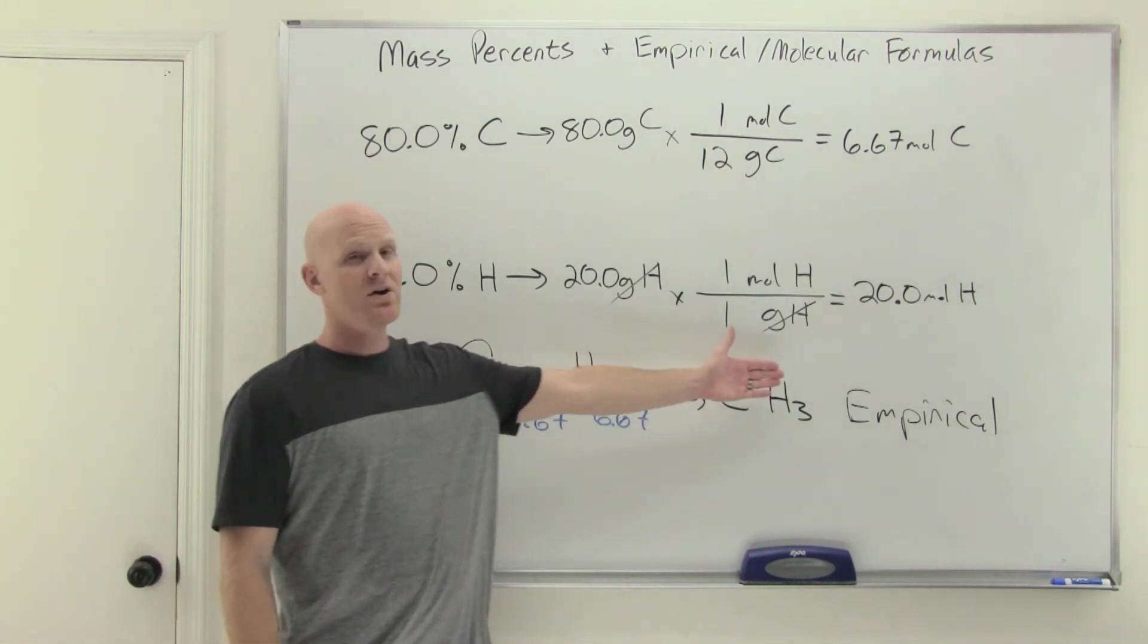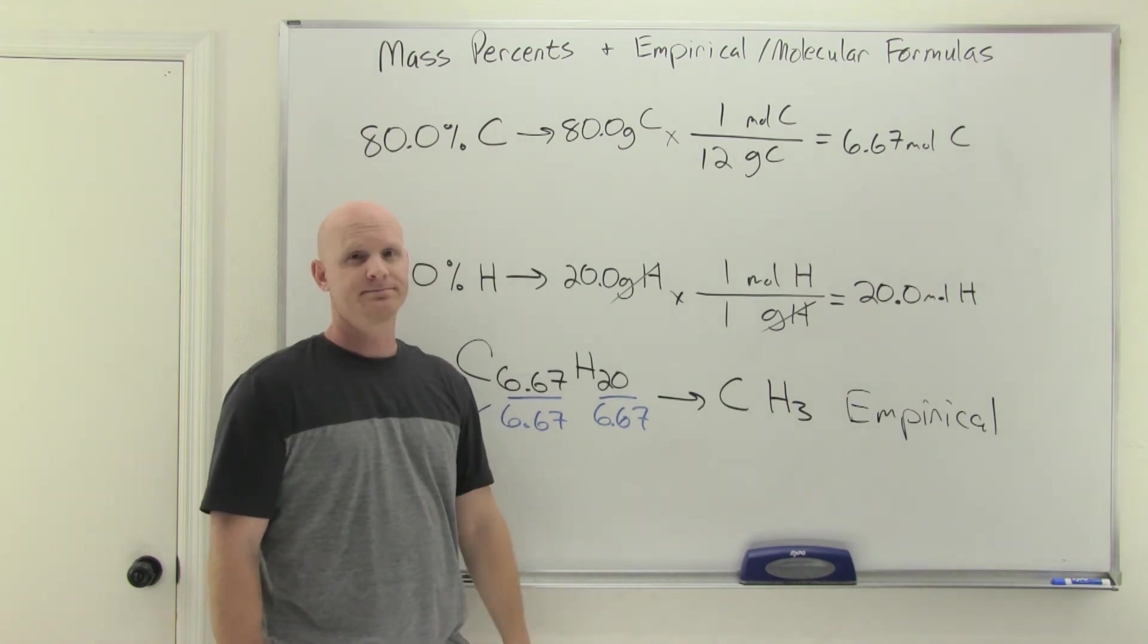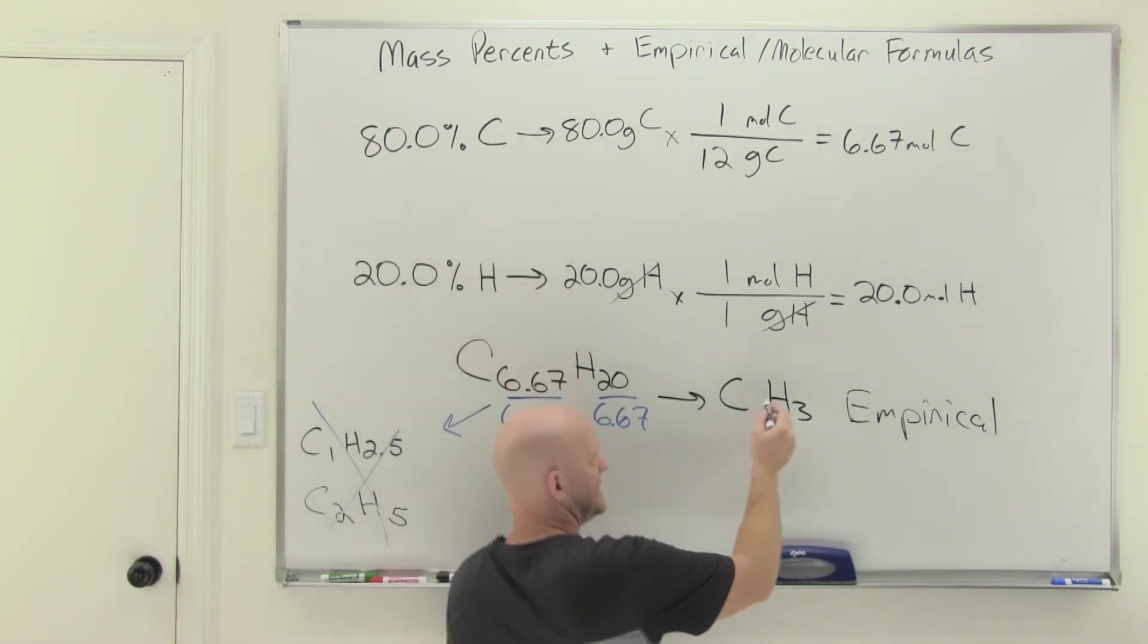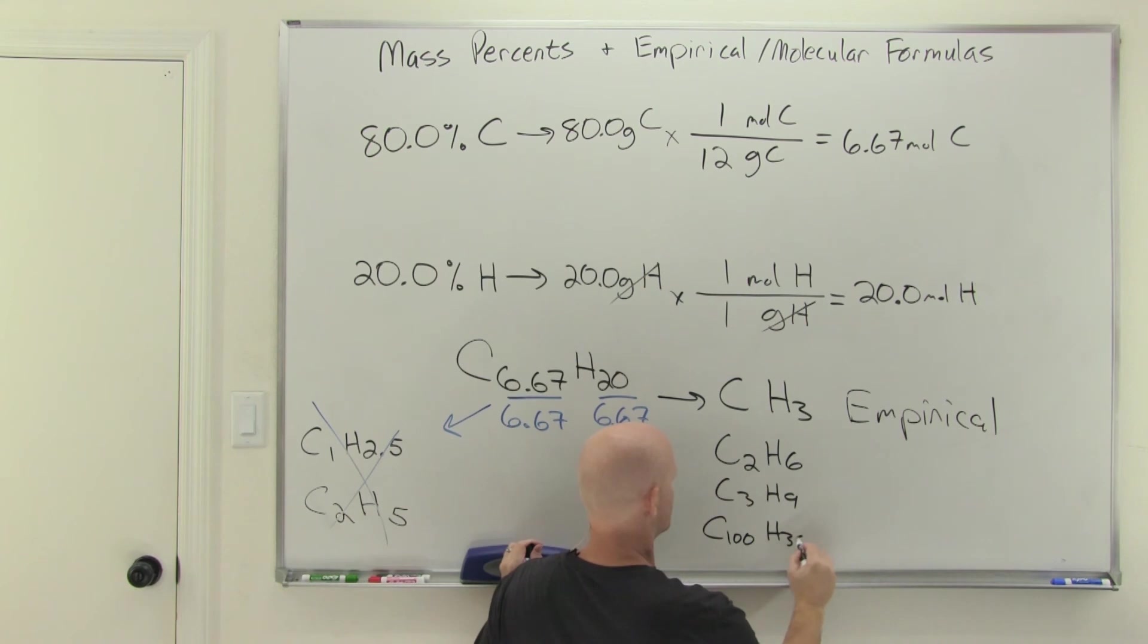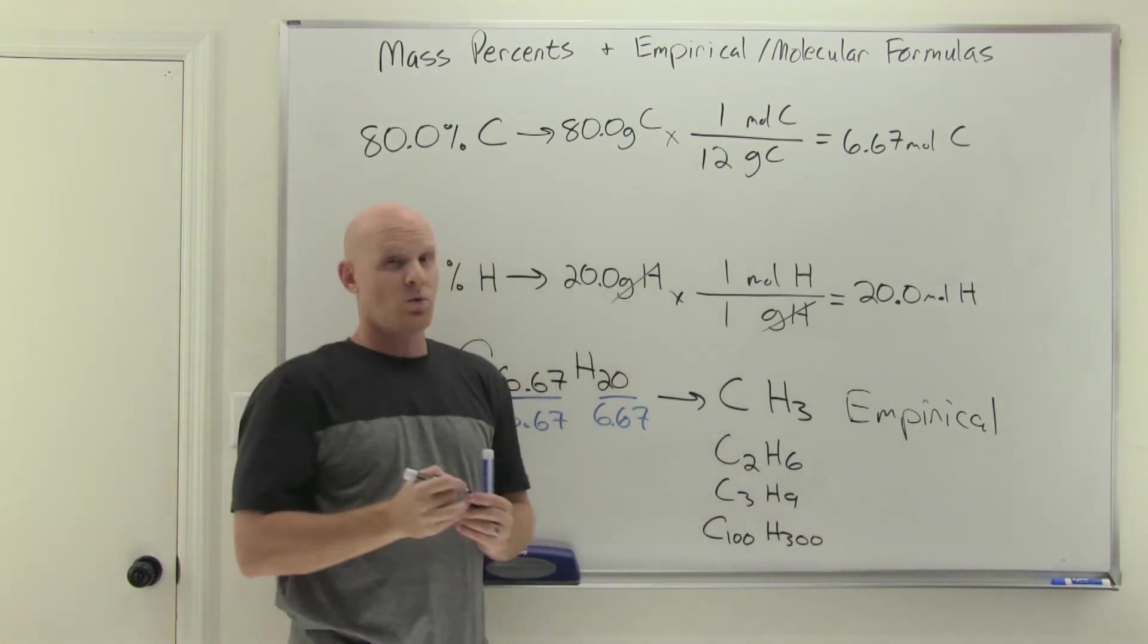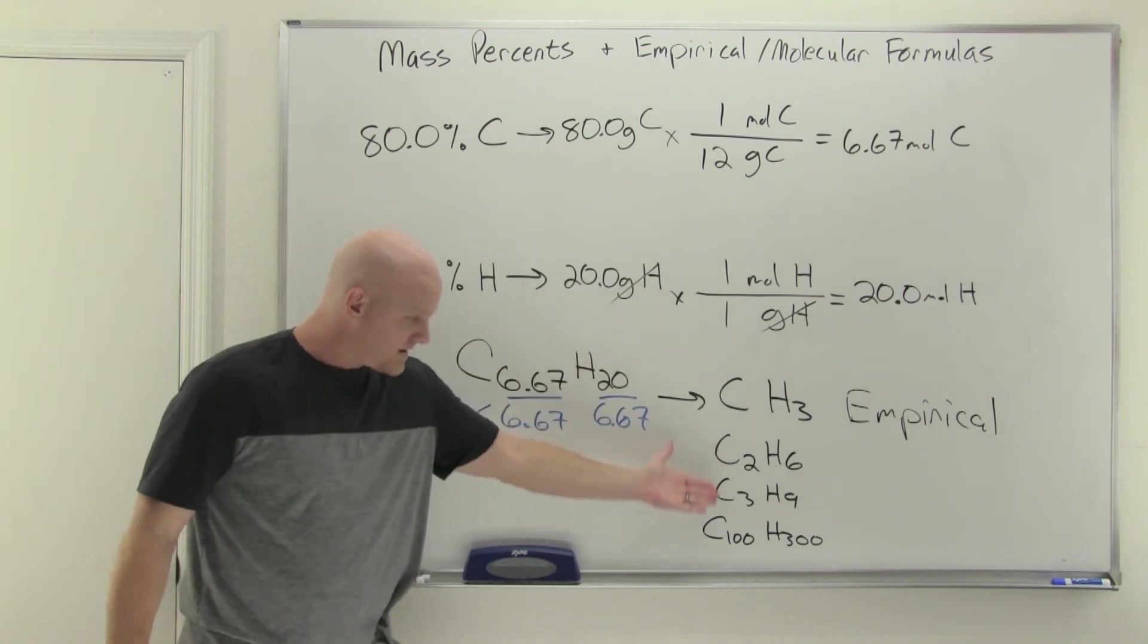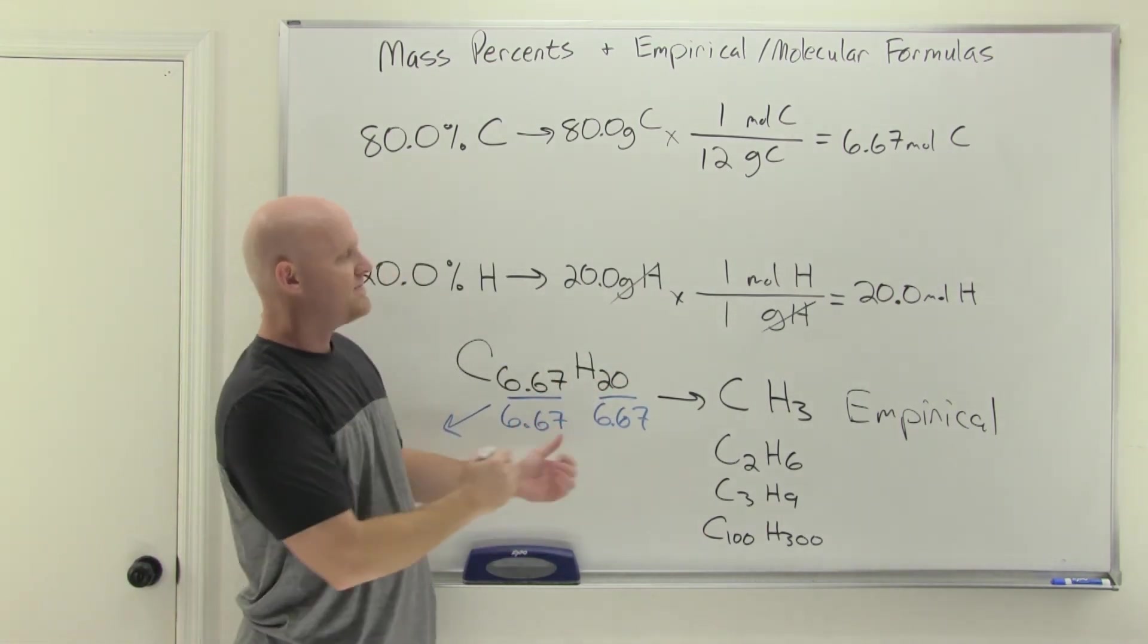This is an empirical formula. My next question for you is, is this the molecular formula? Well, maybe. Could be. It could also be any multiple of this, right? As long as it's fundamentally a 1 to 3 ratio, so C2H6, C3H9, C100H300. As long as it's a 1 to 3 ratio of carbon to hydrogen atoms, it could be anything. There's an infinite number of possible combinations all the way up to infinity. So how do we figure out the right one?